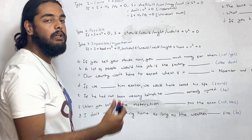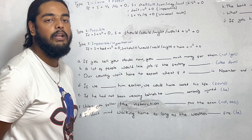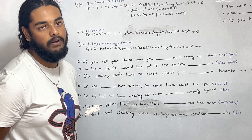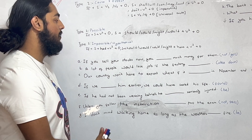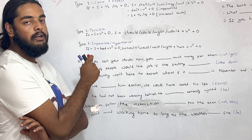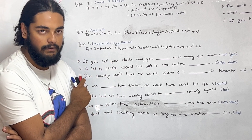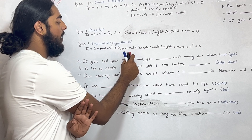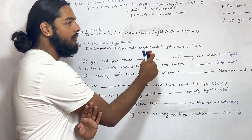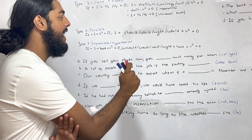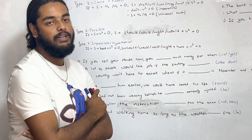Type 3 — impossible or hypothetical. If-clause uses past perfect: had plus verb 3. Main clause uses: should/would/could/might have plus verb 3. If you had — might plus verb 3 — change.